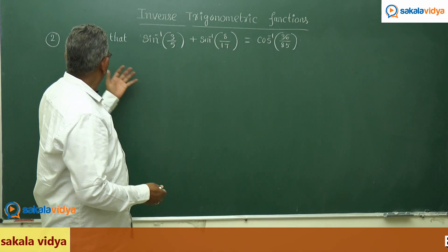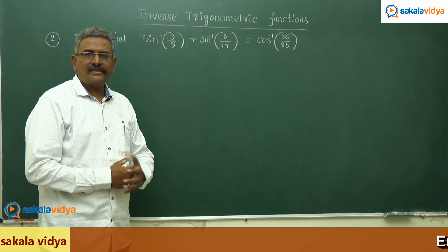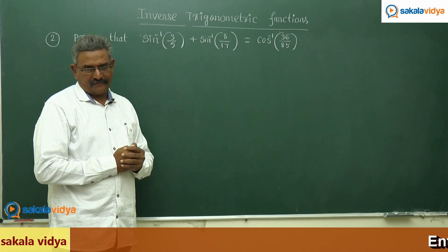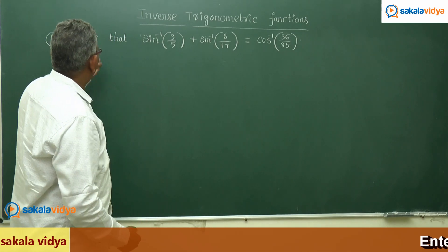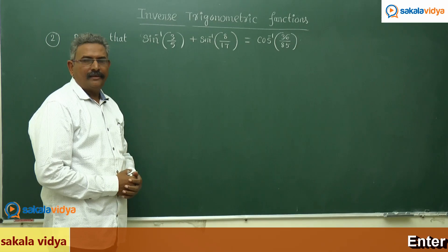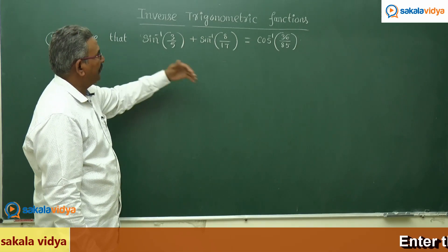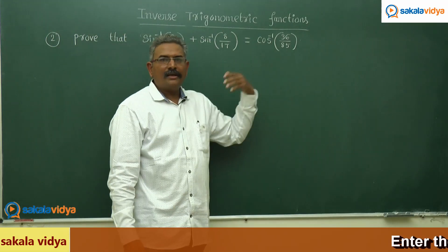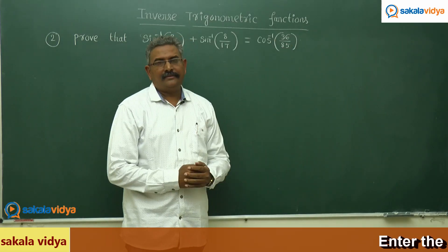Let us solve one more problem. First let us read the question. Prove that sin inverse of 3 by 5 plus sin inverse of 8 by 17 equals to cos inverse of 36 by 85.